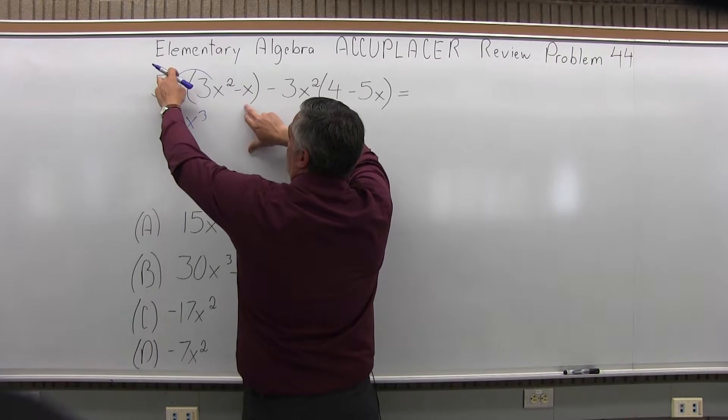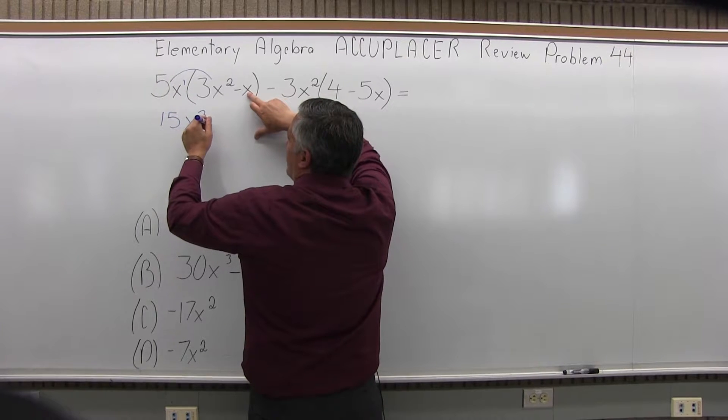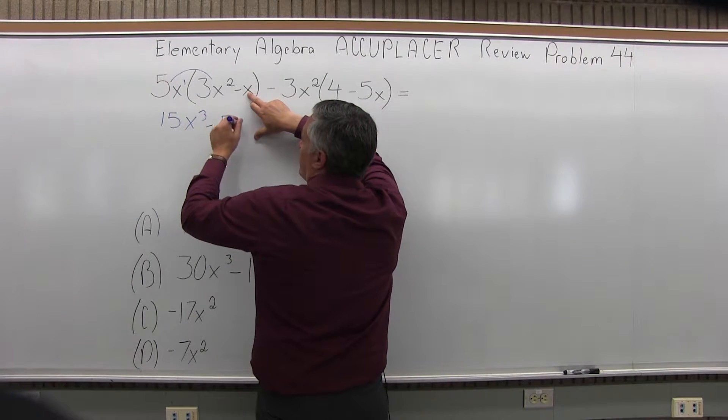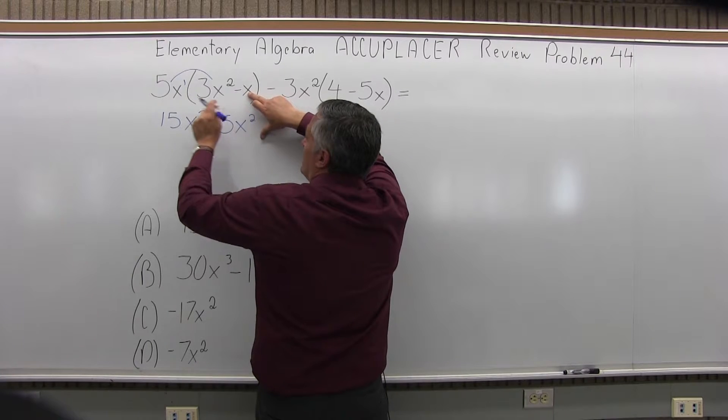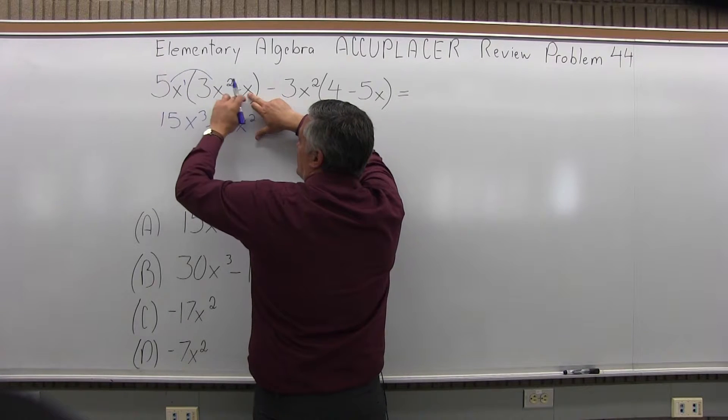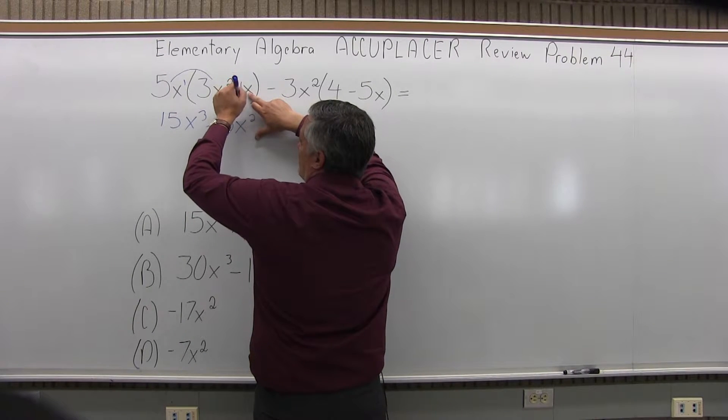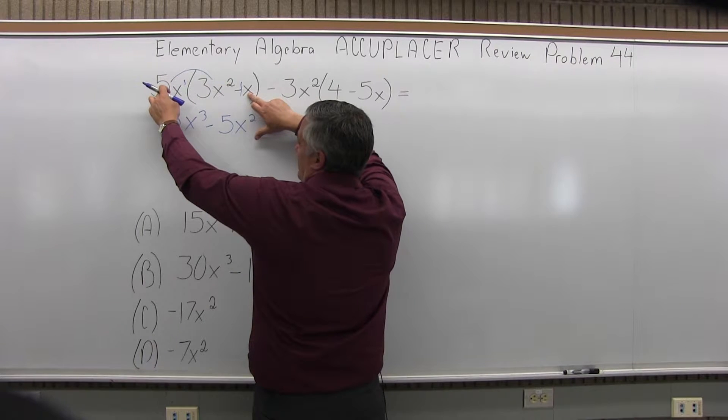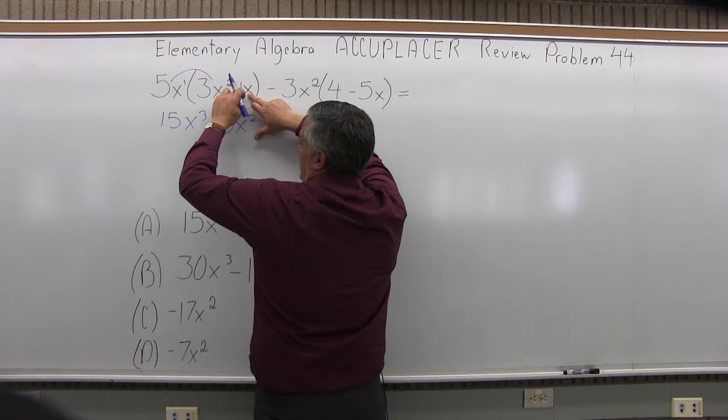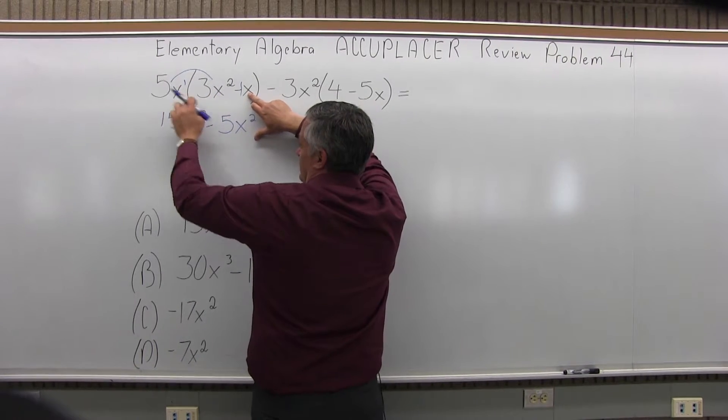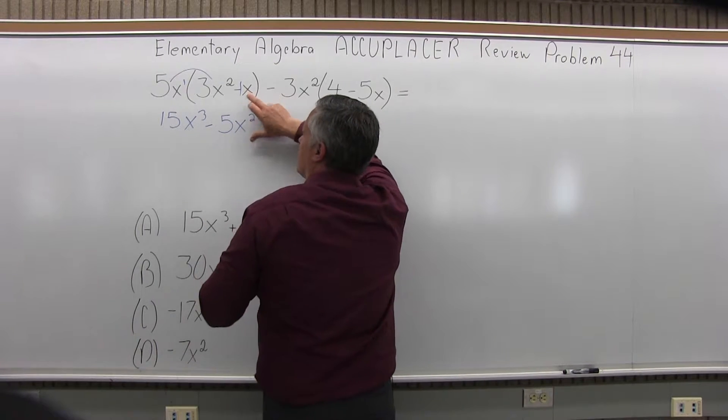So now 5x times negative x will be minus 5x squared. So again, I focus first on the numbers. This doesn't have a number in front. You can assume it's a minus 1x at the second part of the parentheses. So 5 times minus 1, there's my minus 5. Then x times x, x to the second.